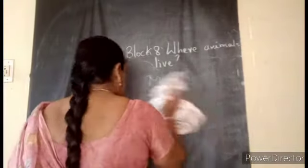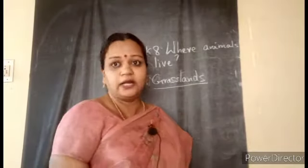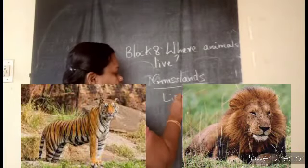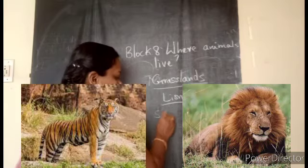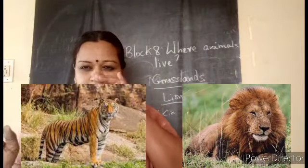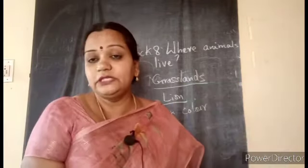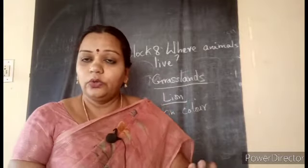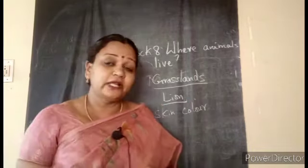Next we move on to grasslands, where tall grasses are generally found. Different types of animals live in grasslands. We will consider the lion. The lion's skin color helps it to merge — or camouflage — with the surrounding. Camouflage means mixing with the surroundings, so that enemies or prey cannot identify them.